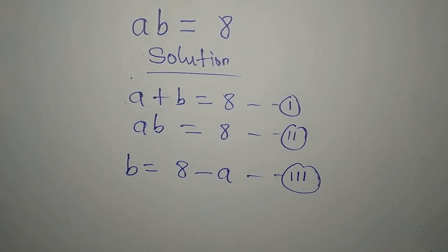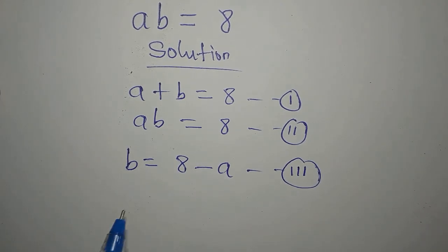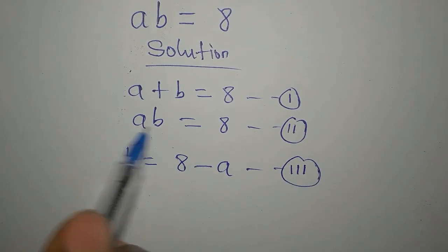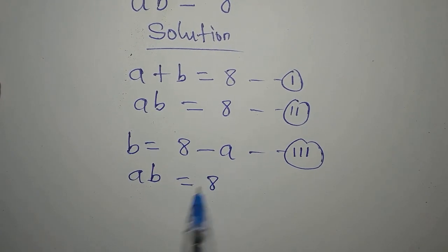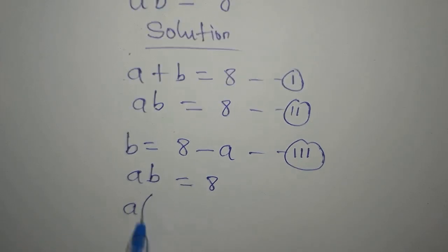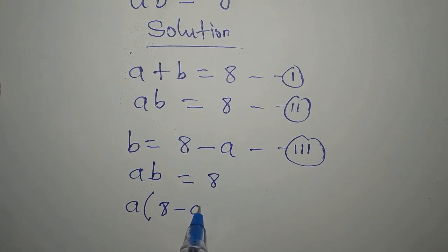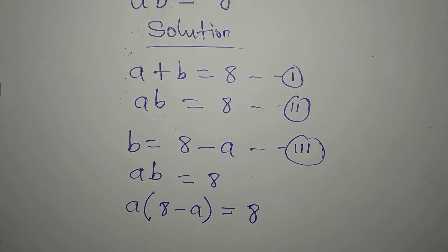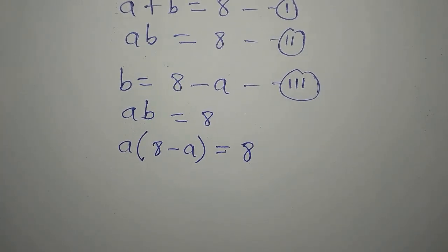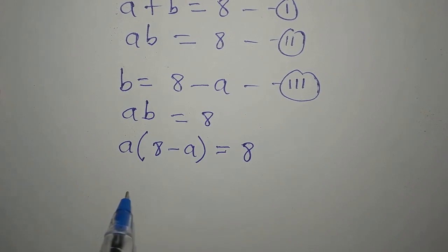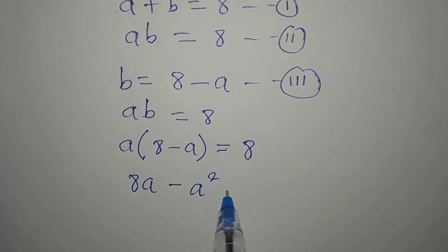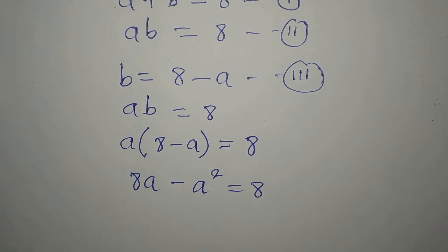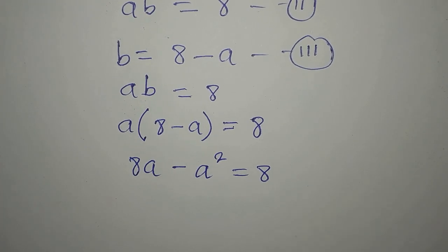Now, what again can I do? If I continue from here, this is what we're going to do. Put this equation 3 into equation 2, where we have AB equals 8. So we have A already, and B is now 8 minus A. Then we have this equal to 8. Now, what again can I do? Open the bracket. Meaning that you have 8A minus A squared equals 8. Because A is to multiply everything in the bracket.